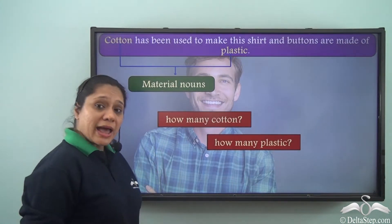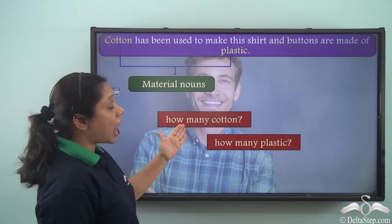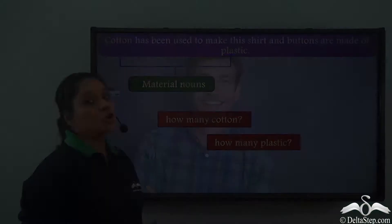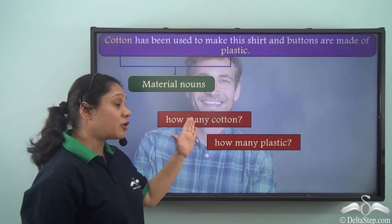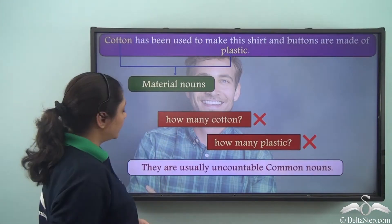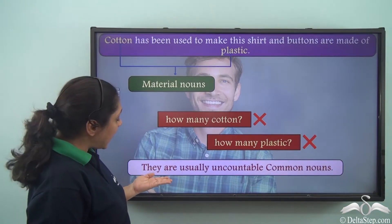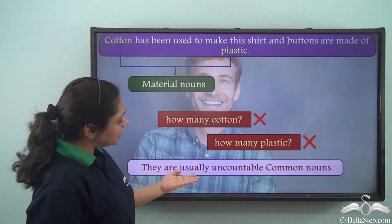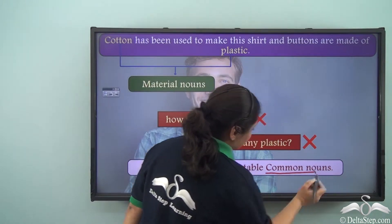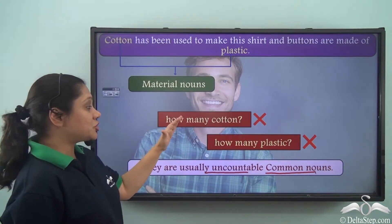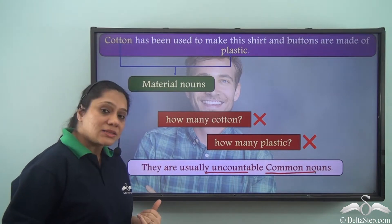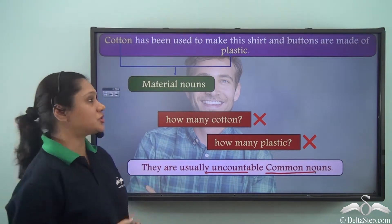Can we answer the question 'how many cotton' or 'how many plastic'? No, we cannot answer these questions. So we realize that material nouns are usually uncountable common nouns. They do not answer the question 'how many' but they can answer the question 'how much'.